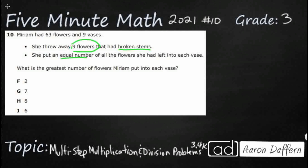So we can write a number sentence — we can say 63 minus 9. We're going to need to regroup there. So that's going to be 5 and 13. So now we've got 54 left.